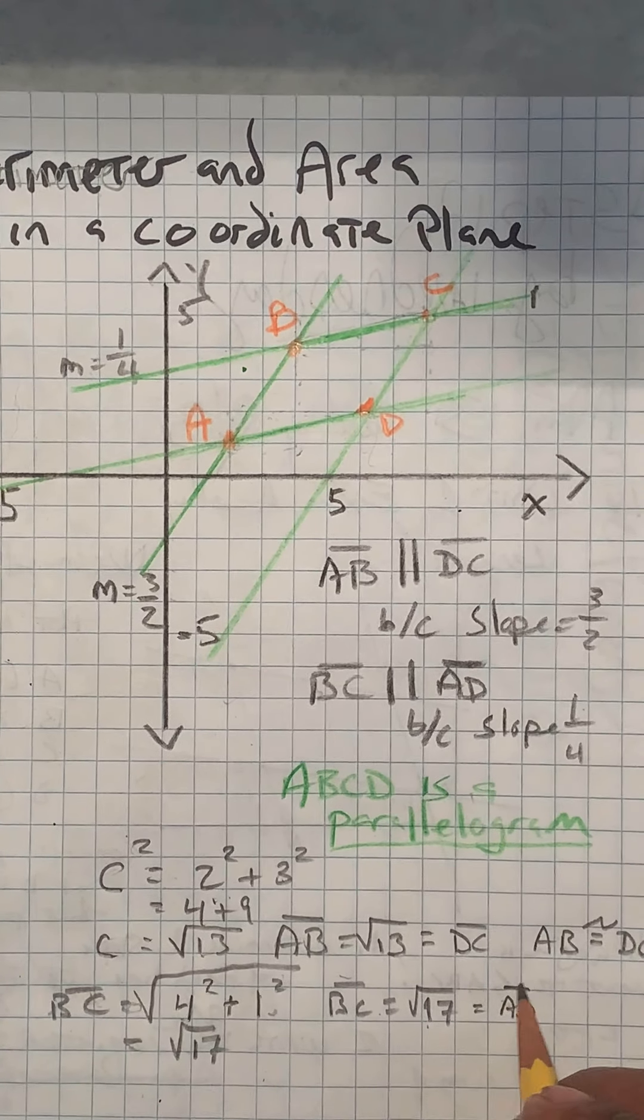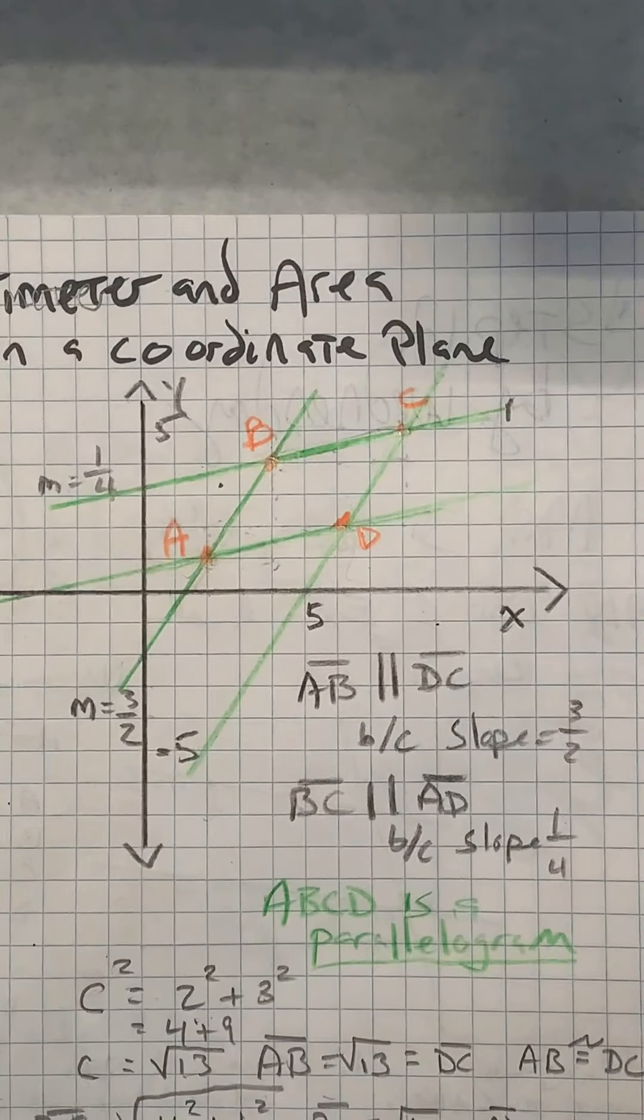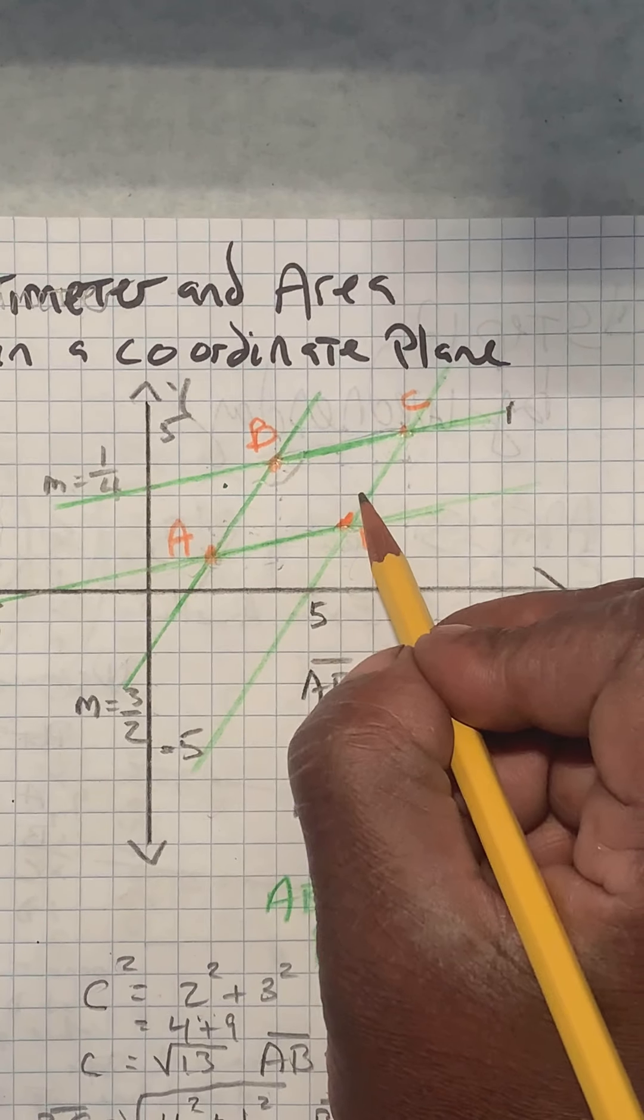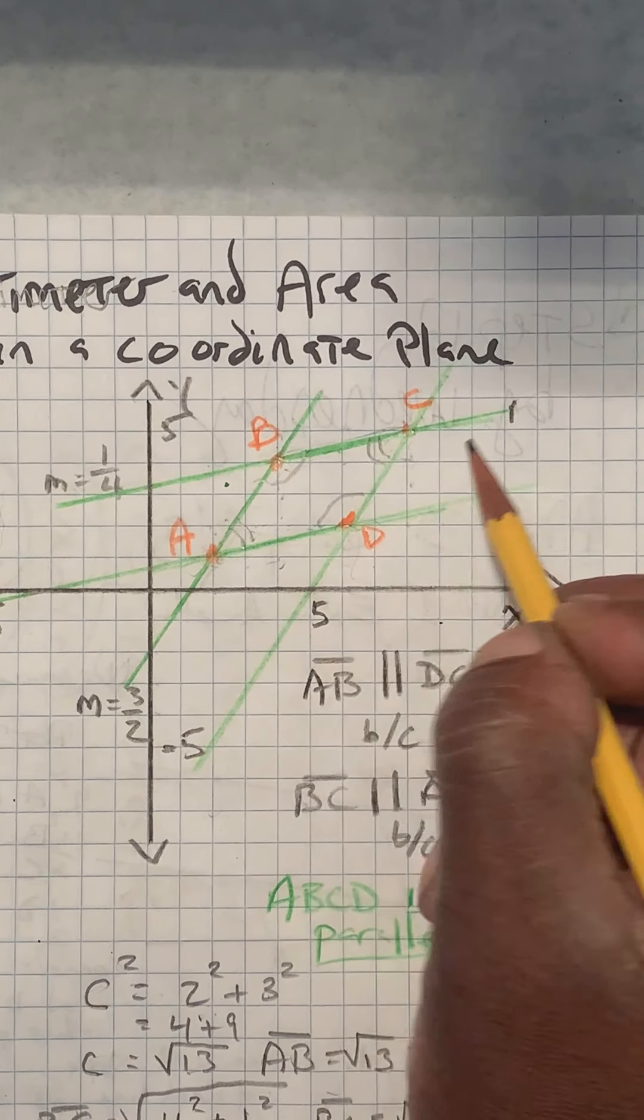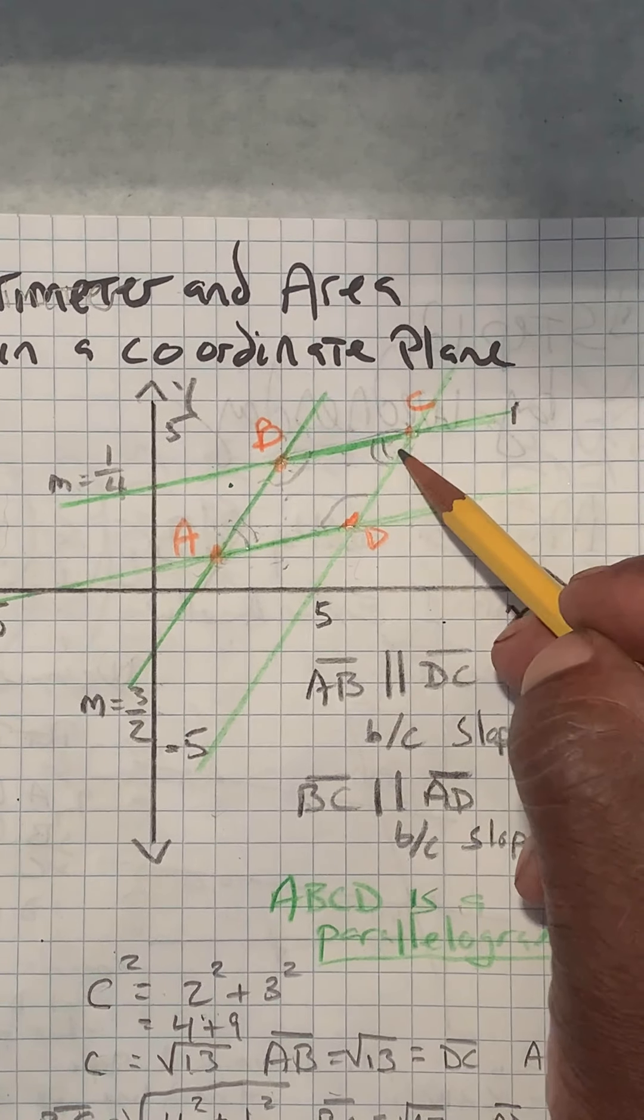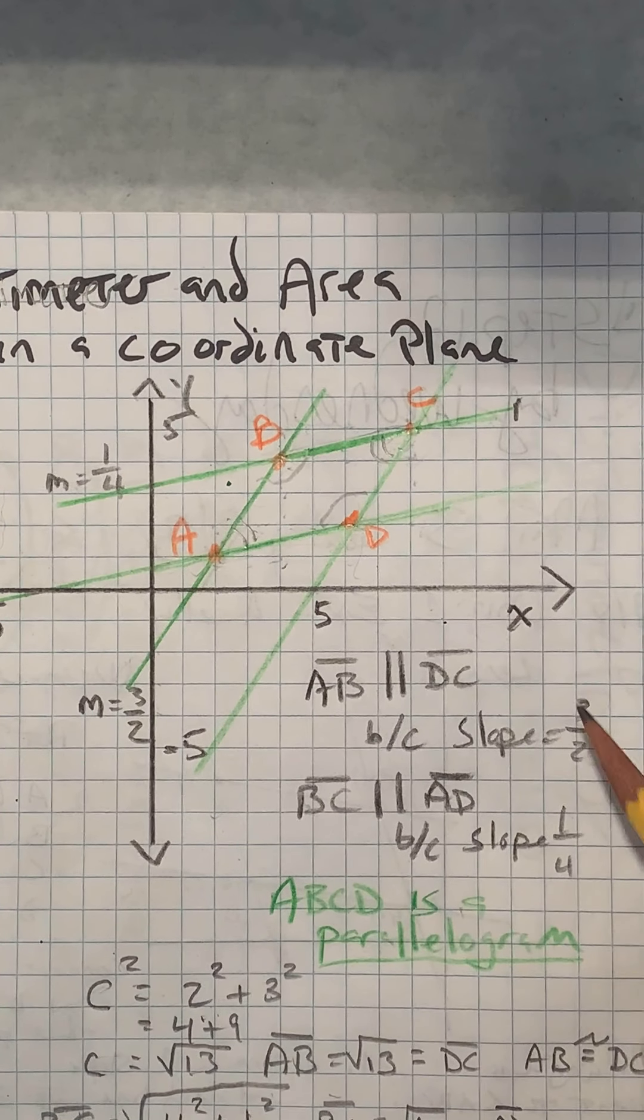And now we have proven that this ABCD is indeed a parallelogram, which tells us a lot about the angles. We know in parallelograms opposite angles are congruent. We know that same side angles add to 180 degrees. So we know a lot once we figure out what this thing is.